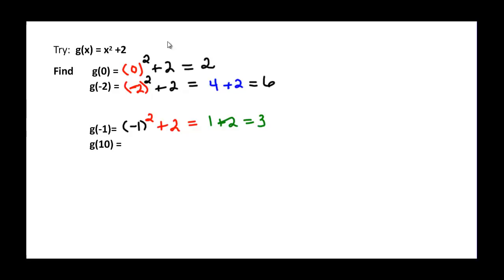One more. g(10). So we have our 10 as our x. We're replacing this x up here with 10. And then it tells us that we have to square that. So we will square it and then add 2. Well 10 times 10 is 100 plus our 2. So g(10) is equal to 102.